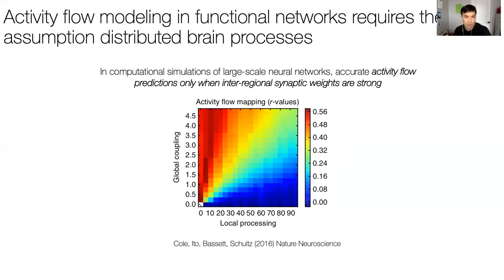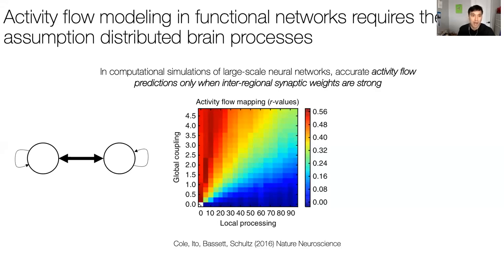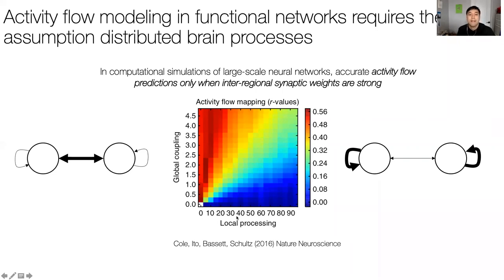This success did not have to be the case. Activity flow modeling in empirical data requires the assumption of distributed brain processes. We ran computational simulations of large-scale neural mass models, varying both inter-region coupling and self-coupling parameters. Activity flow mapping only works when there is strong inter-region coupling relative to self-coupling—what we call the distributed parameter regime.